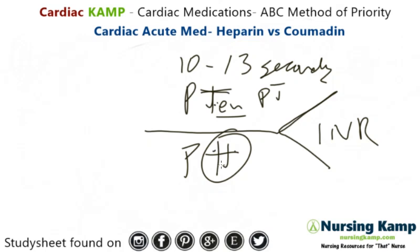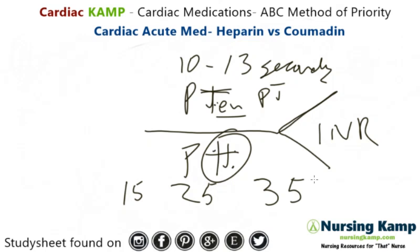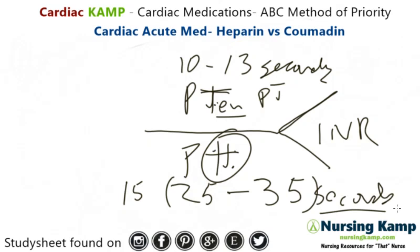For the PTT, I write 1, 2, and 3, and I put a 5 next to each one — giving 15, 25, 35. So a normal PTT is 25 to 35 seconds.